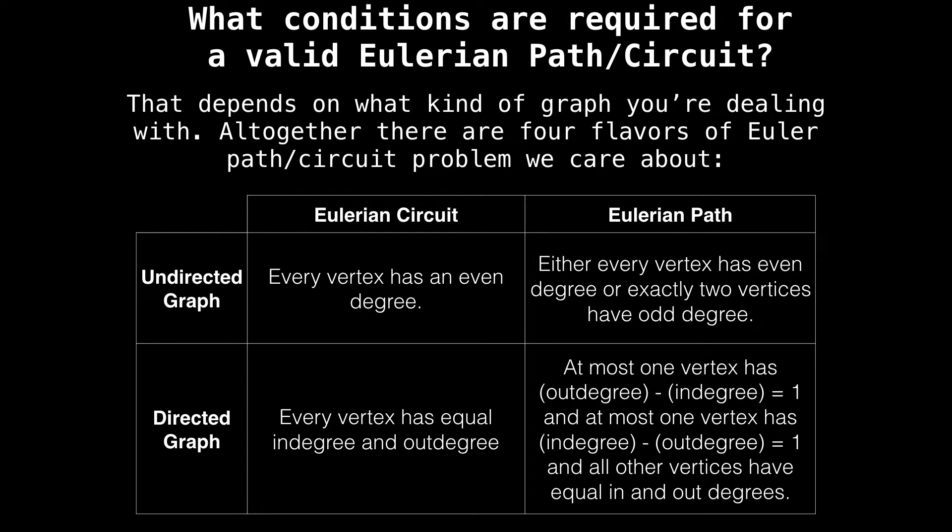Coming back to the table, you should be able to understand the constraints required for each variant of the Eulerian path and Eulerian circuit problem. However, let's go over them one by one. The simplest case is when we have an undirected graph and we want to find an Eulerian circuit. The requirement for this is that every node in the graph has an even degree. The Eulerian path problem on an undirected graph is very similar, except that in addition that every vertex has an even degree, you can also have exactly two vertices which have an odd degree. Those two vertices, if they exist, would be the start and end nodes of the Eulerian path.